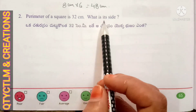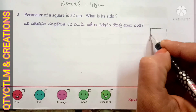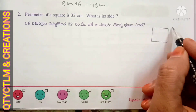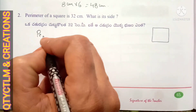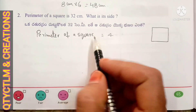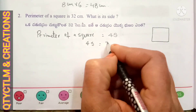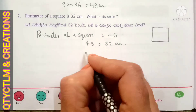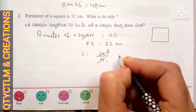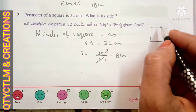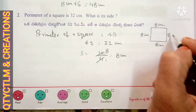Next question: perimeter of a square is 32 centimeters, what is its side? This is a square, its perimeter is 32 centimeters. Perimeter of a square has 4 sides, so 4 sides is equal to 32 centimeters. Side is equal to 32 divided by 4 — four eights are 32 — so each side is 8 centimeters.